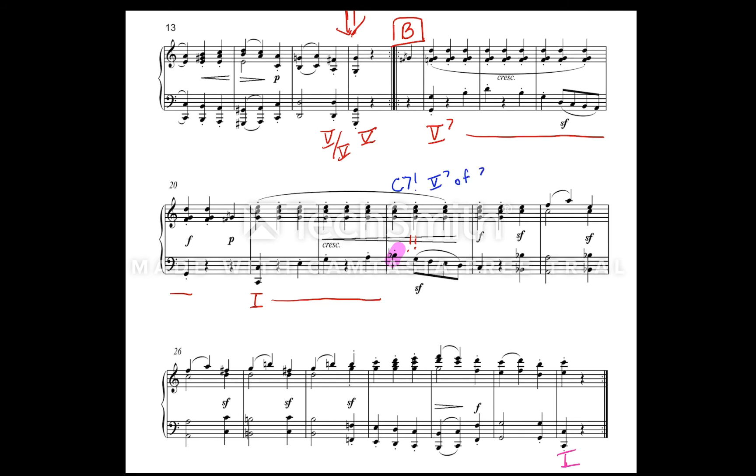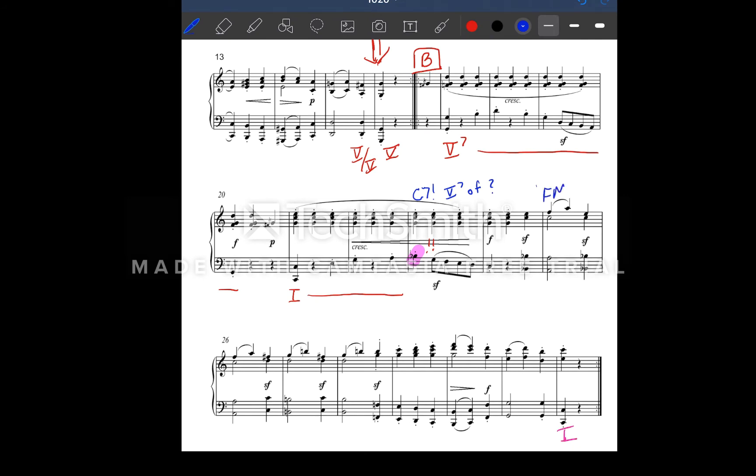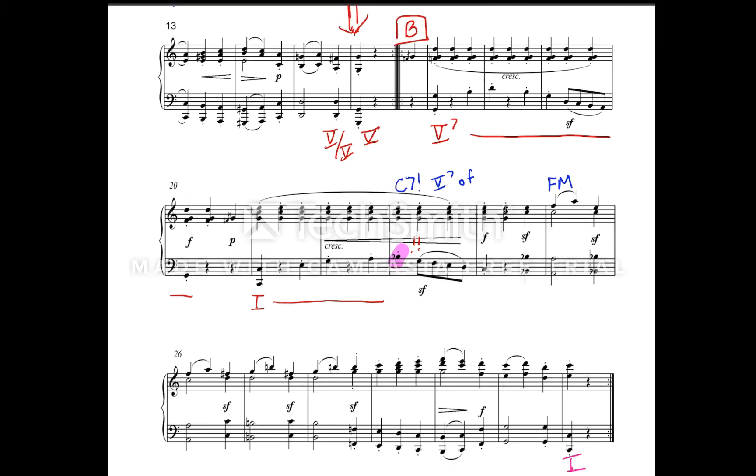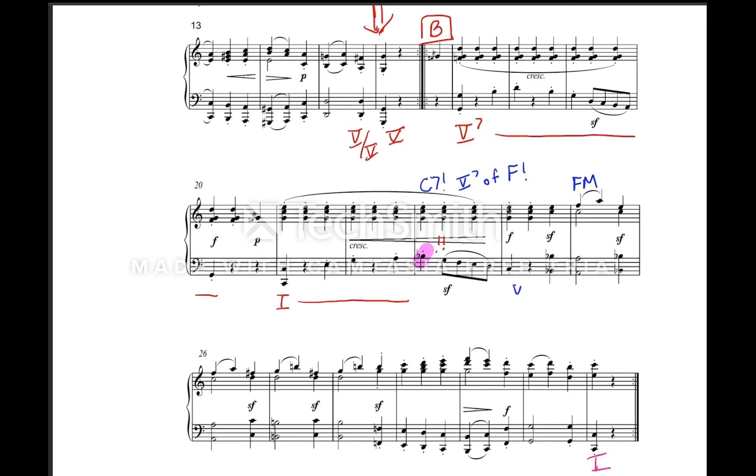So, how does this chord relate to what comes after it? The chord on the downbeat of measure 25 is an F major chord, and a C7, a C dominant 7th, definitely relates to F major as it's V7. Since the piece does not modulate to F major, this is a tonicization, and the dominant 7th is a V7 of F. F is 4 in the key of C major, so this is a V7 of 4.